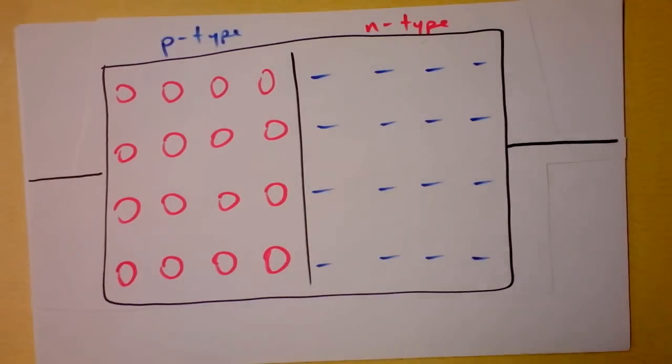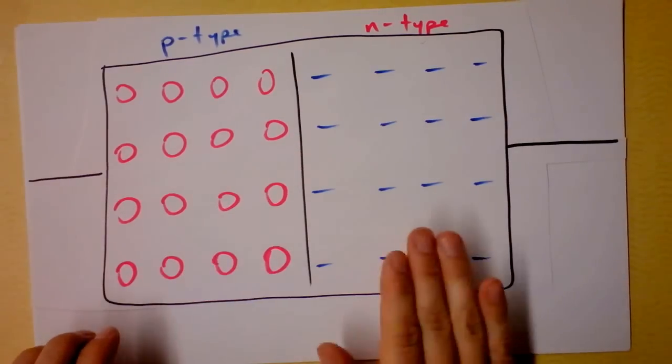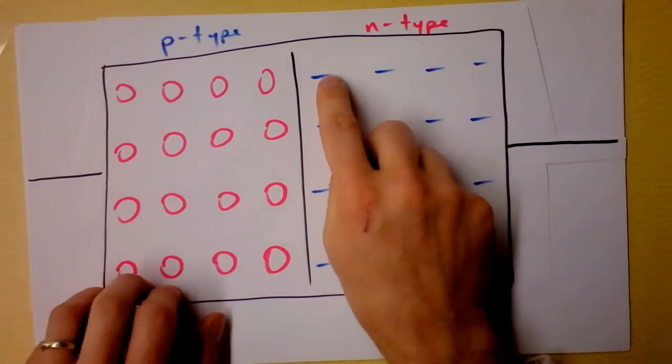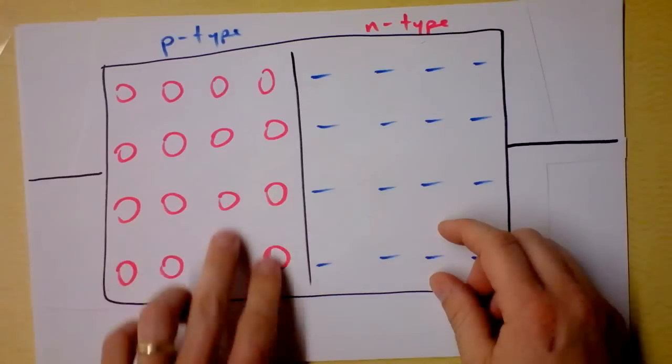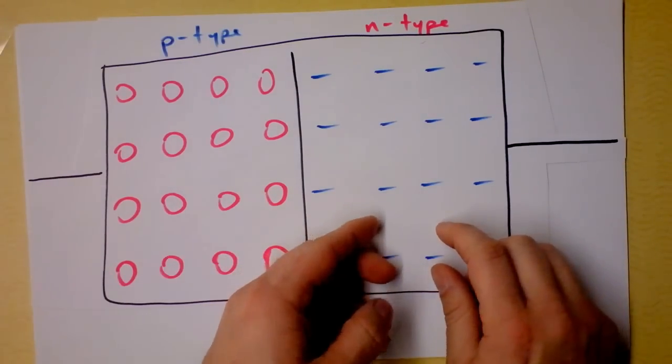We ended our last video by concluding that if you put p-type next to n-type, then some of these free electrons in the n-type will migrate over to the left, and some of these free holes in the p-type will migrate over to the right.